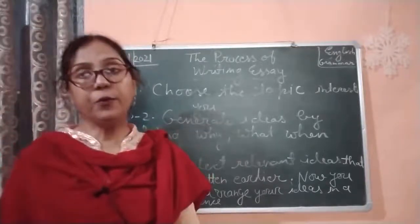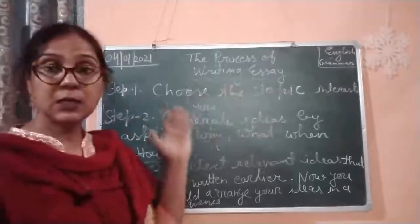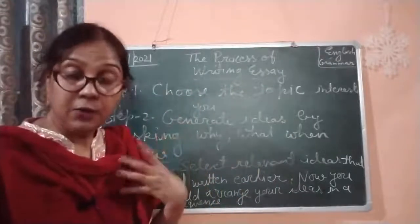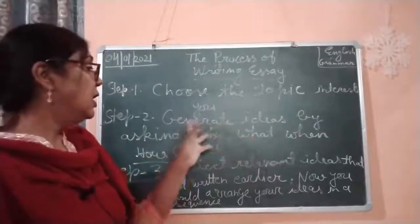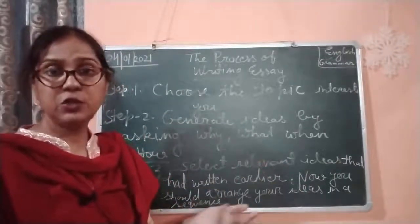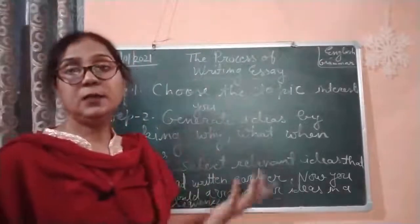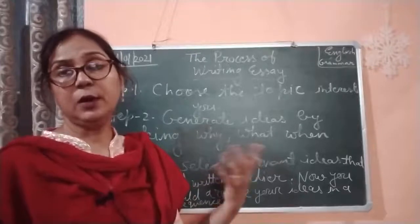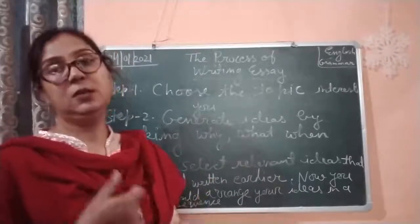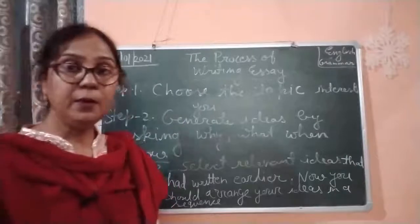Now we are moving to step four. To recap: step one is choose the topic which you have interest in. Step two is generate ideas by asking yourself why, where, and how — these are the questions to ask yourself. Step three is to take the ideas you have already written in your rough copy and sequence or rearrange them properly. Then you will write a proper essay in a proper way.